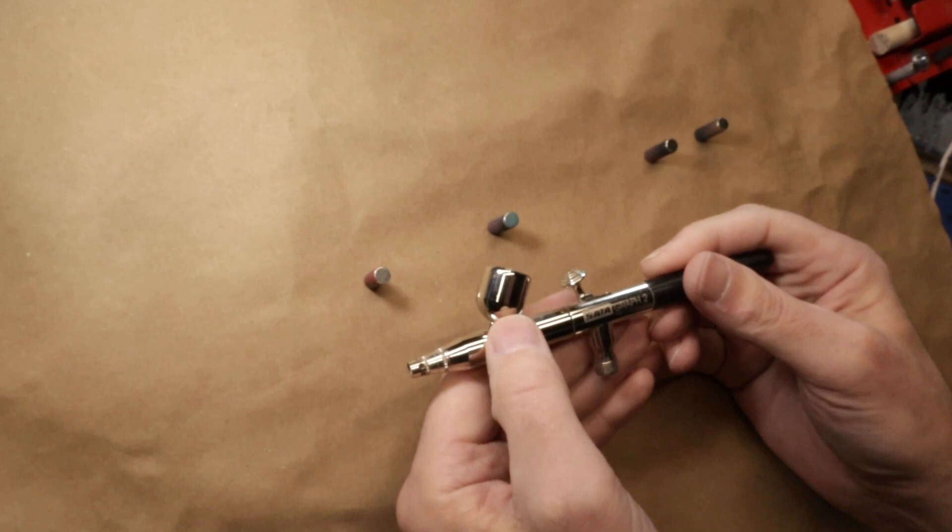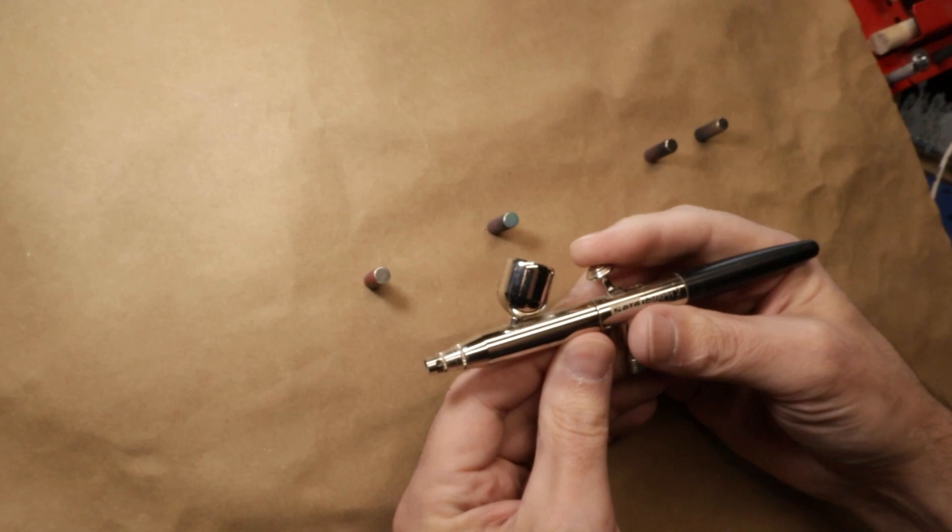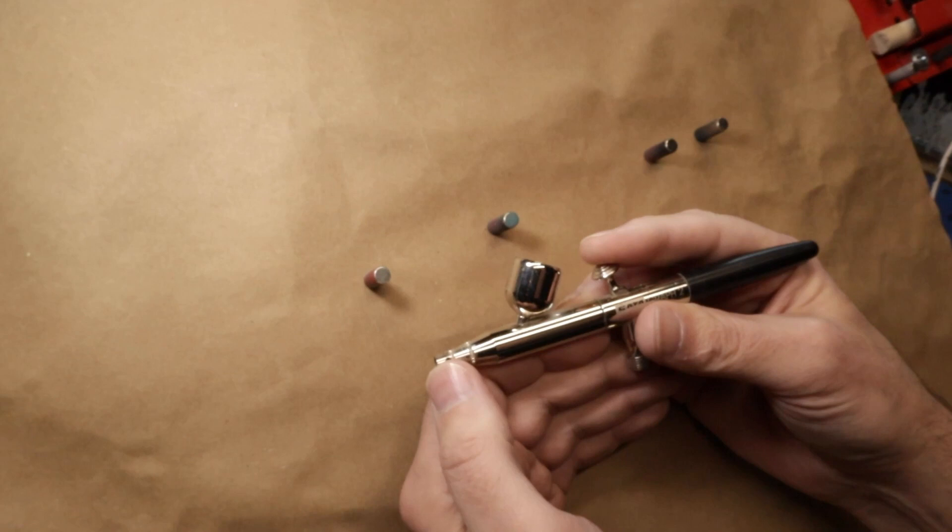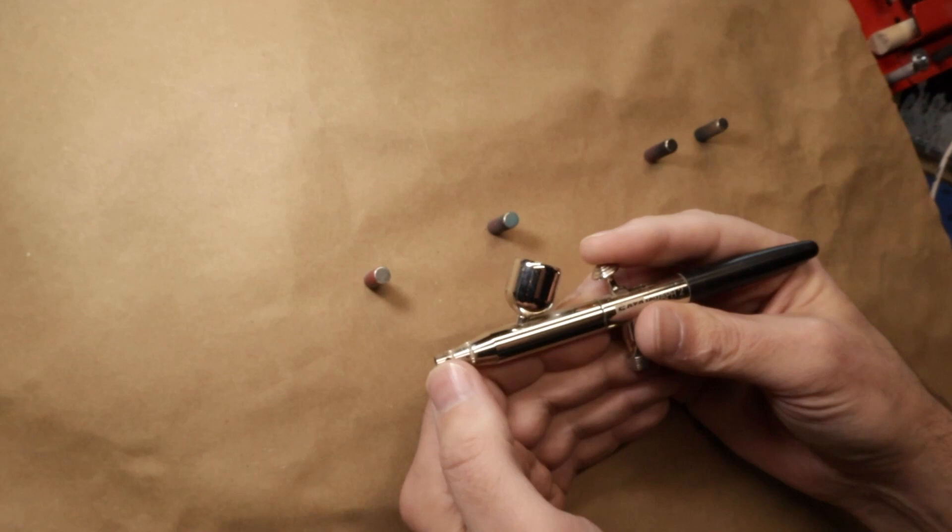The basic way that an airbrush works is once you get the air flowing through, it creates a little vacuum right here in the front of the airbrush, and that vacuum draws the paint through, coats this little tiny needle, and then that paint is atomized off of that very fine needle and gives you that really fine controllable spray.